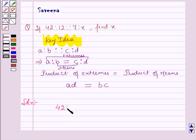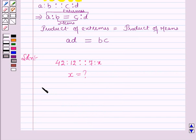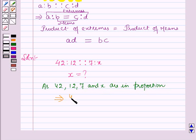Given 42 is to 12 as 7 is to x, then we have to find the value of x. As 42, 12, 7 and x are in proportion, this implies 42 is to 12 is equal to 7 is to x.